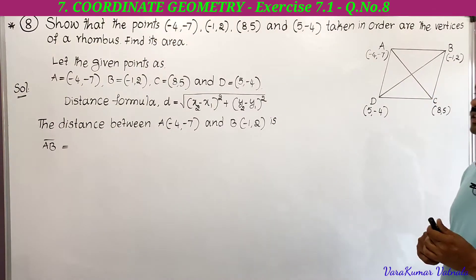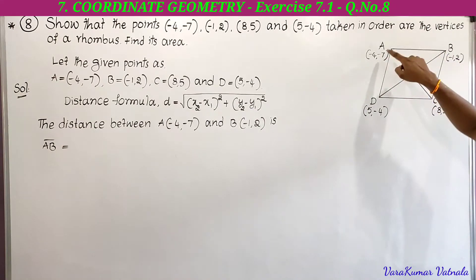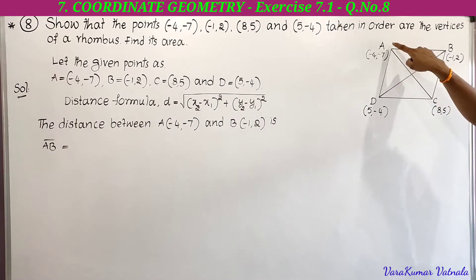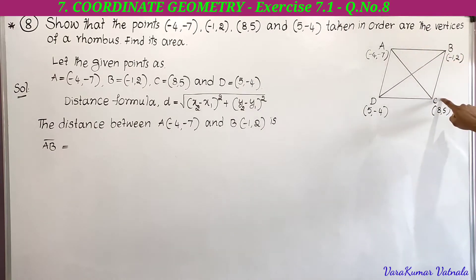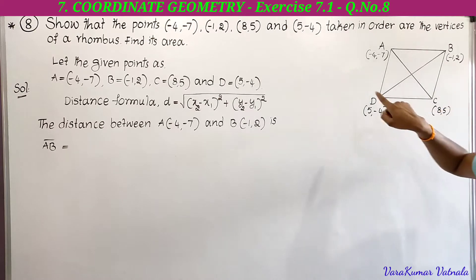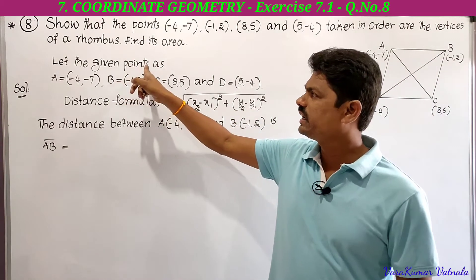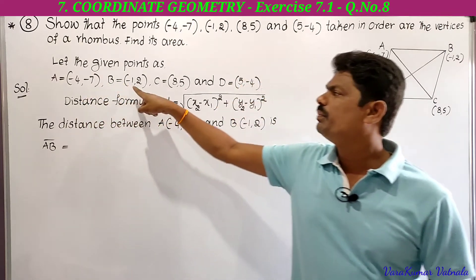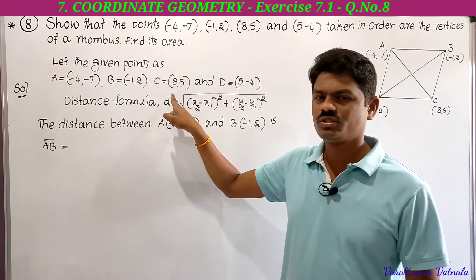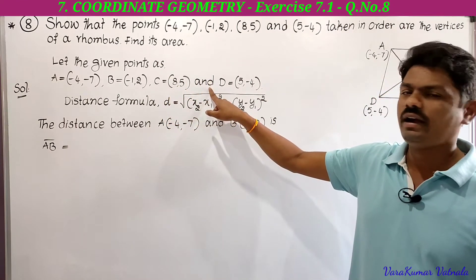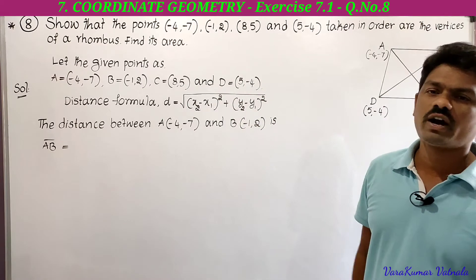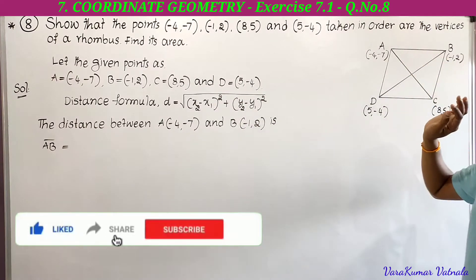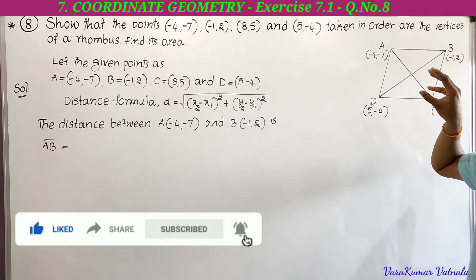We have four points given as A, B, C, D. We take them in order, either clockwise or anti-clockwise: A, then B, then C, then D. Let A = (−4, −7), B = (−1, 2), C = (8, 5), and D = (5, −4). These are the four points and we have to show they are the vertices of a rhombus.